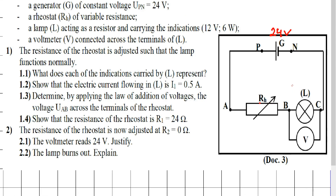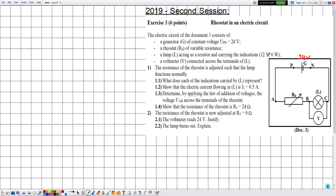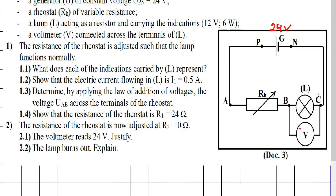The rheostat is an electric component which is a resistor of variable resistance. The lamp L acts as a resistor and carries the indications 12 volts and 6 watts. The lamp L carries these indications: 12 volts and 6 watts. A voltmeter V is connected across the terminals of L. The voltmeter is an instrument used to measure the voltage across an electric component — in this case, measuring the voltage across lamp L.